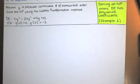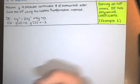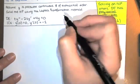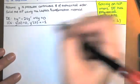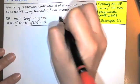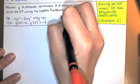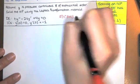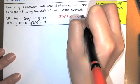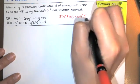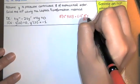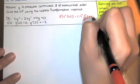Since the differential equation has variable coefficients, we're going to use the derivatives of a Laplace transform theorem. We said that under certain conditions, the Laplace transform of t to the n-th power times f of t is negative 1 to the n times the n-th derivative with respect to s of the Laplace transform of f of t, which is F of s.